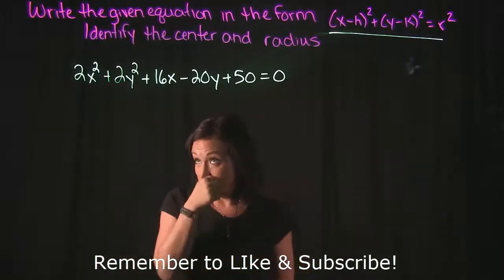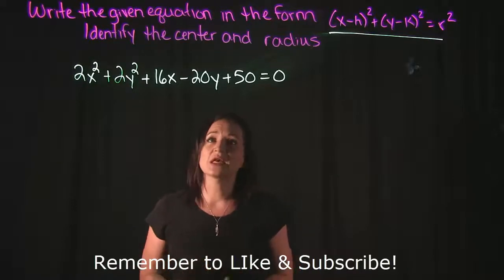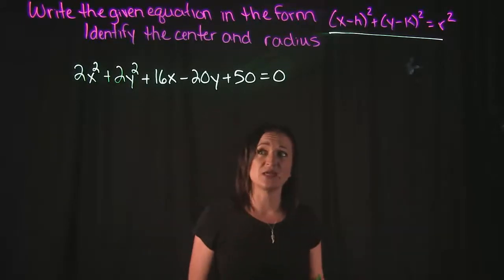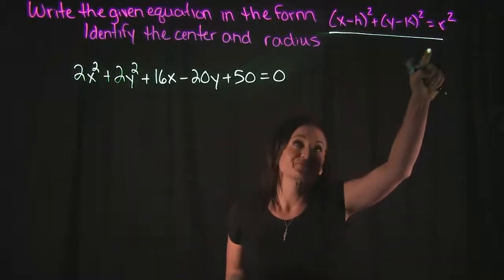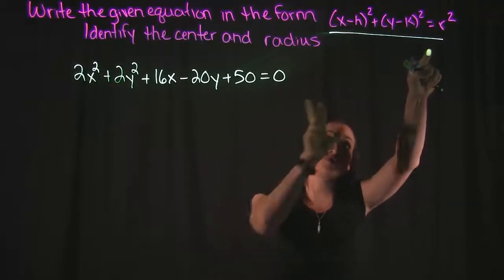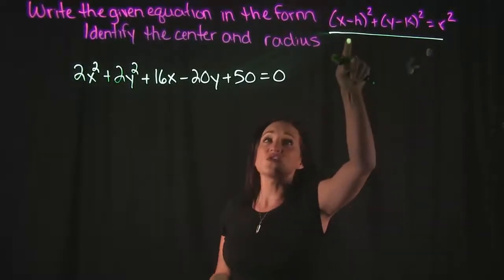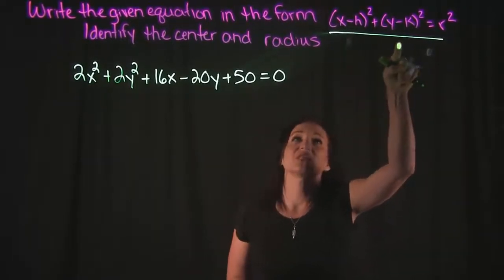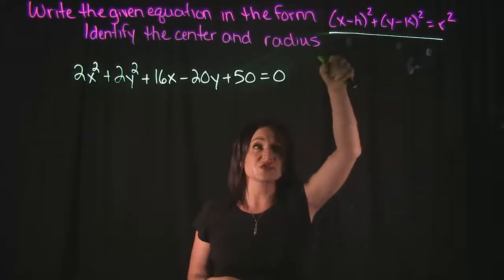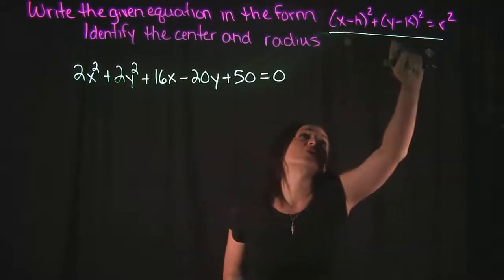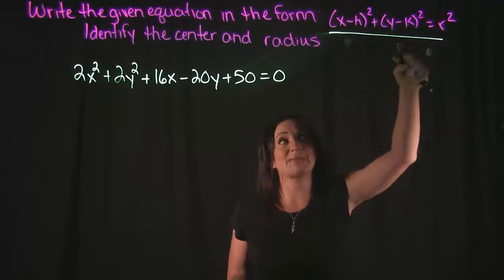Now, the way that we're actually going to do this is by using the process of completing the square. Now, taking a look at this example that we have here, there's a couple of things that we need to pay attention to. When completing the square, we actually have two different completing the square procedures that we're going to have to do. One for the x value, one for the y value. Because we have (x-h)². So we're going to have to complete the square to factor that. And then we're going to have to use our y terms and also complete the square with that to get this (y-k)².